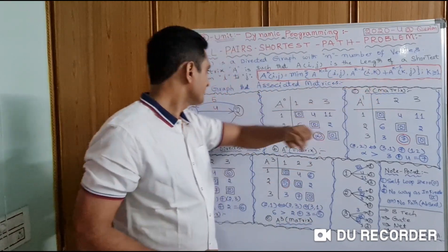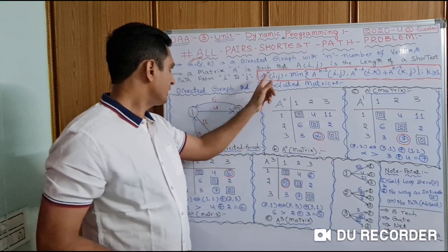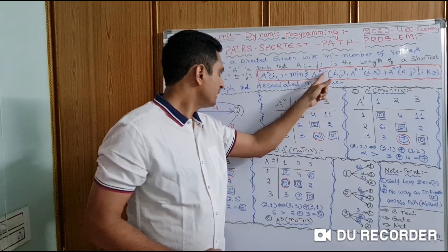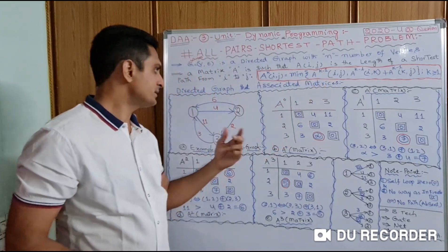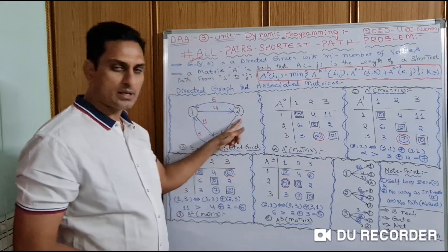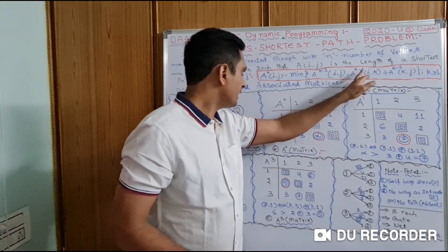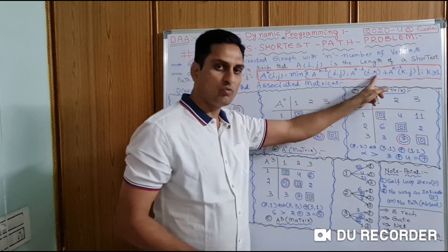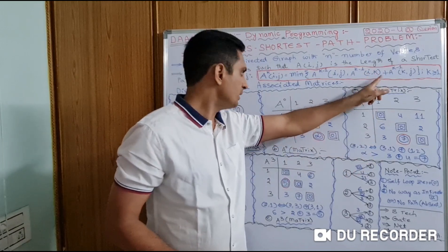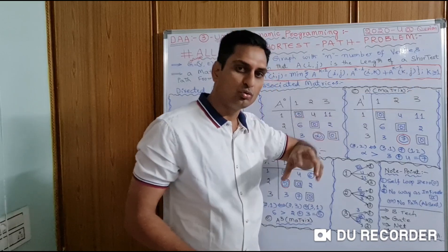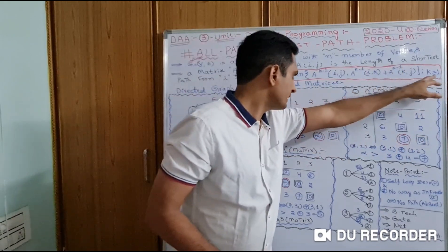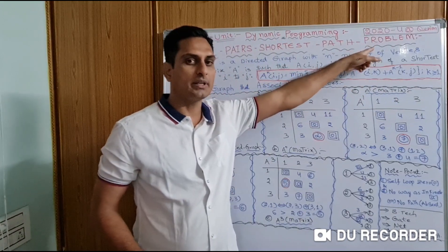The formula is: A(K)[i,j] = minimum of A(K-1)[i,j] and A(K-1)[i,k] + A(K-1)[k,j], where K is greater than or equal to 1. A(K-1) is the previous matrix. We take the previous matrix value for i,j directly, or we go via intermediate vertex K — from i to K, then K to j — and take whichever is smaller. This is the formula for finding the shortest path.